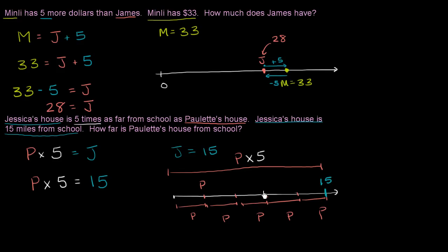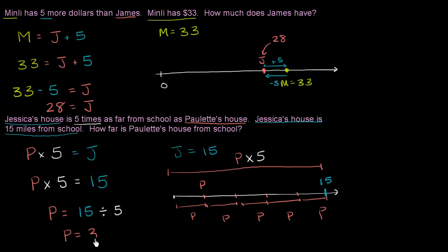So how do we figure out P? If five times P equals 15, I could just divide 15 into five equal groups. P equals 15 divided by five. 15 divided by five is three. So Paulette lives three miles from school.